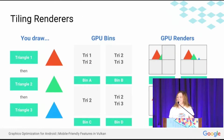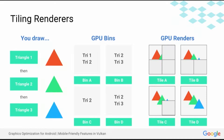On the flipside, tiling renderers are a little more complicated. You still describe your scene as a series of draw calls, but the GPU, rather than executing them when it receives them, bins them. This means that it's keeping track of which draw calls affect which tiles. When you finish describing your scene, then it executes the list of draw calls affecting a single tile and then commits the results to the frame buffer before moving on to another tile. So your scene builds up one tile at a time.